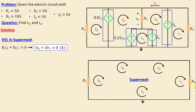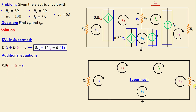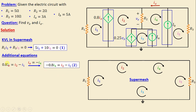We currently have one equation and two unknowns, so we require more additional equations to solve this problem. Let's focus on the current controlled current source. We can write 0.8·Ix = I2 − I1, and we can see that Ix = −I4. If we replace Ix with −I4, we obtain −0.8·I4 = I2 − I1, and I will call this equation two.